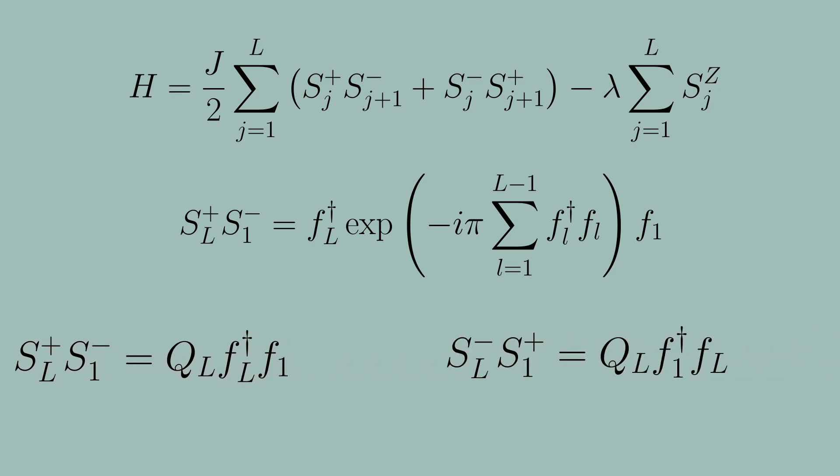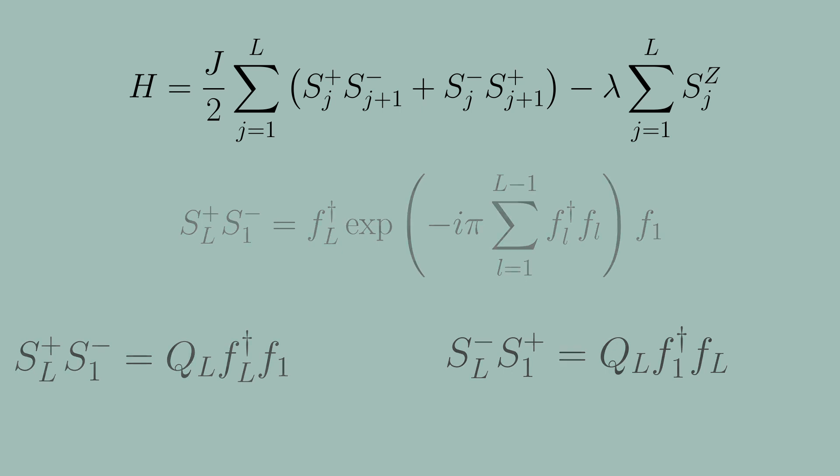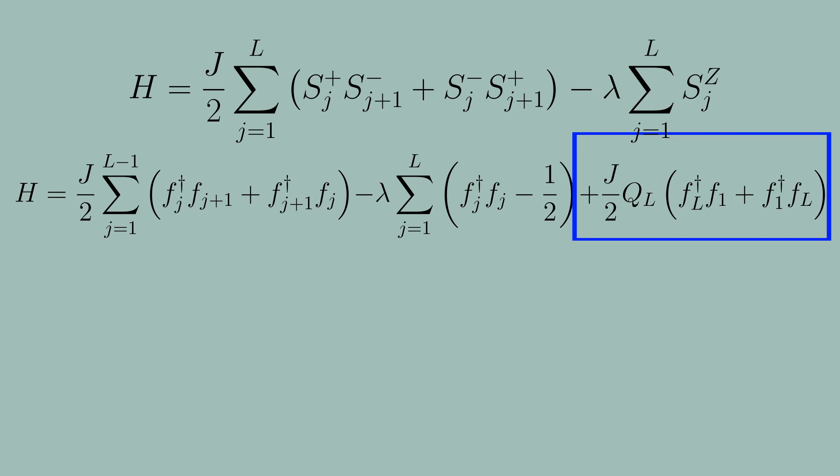So writing out our Hamiltonian here in terms of the fermionic operators, we see that we have a part of our Hamiltonian that can be cleanly written in terms of nearest neighbor hopping in terms of fermionic creation and annihilation operators here in the first portion. The second portion, our whole magnetic field term was cleanly transformed into terms of number operators. So that transformation was quite clean. But we see the boundary term is an issue here.